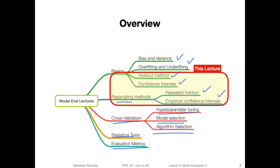And then lastly, in model evaluation five, we will talk about evaluation metrics - so beyond the typical accuracy. So far, we've been talking mostly about classification accuracy and classification error, just because it's simpler. But there are also many other metrics like precision, recall, F1 score, the receiver operating characteristic area under the curve, and others. We will cover these in model evaluation five.